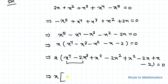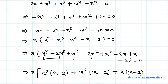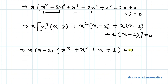This implies x multiplied with — from the first two terms, take x cubed common, giving x cubed times (x minus 2); from the next two terms, take x squared common, giving plus x squared times (x minus 2); and from the remaining terms, factor out (x minus 2), giving plus (x minus 2). So we have x times (x minus 2) times (x cubed plus x squared plus x plus 1) equals 0.